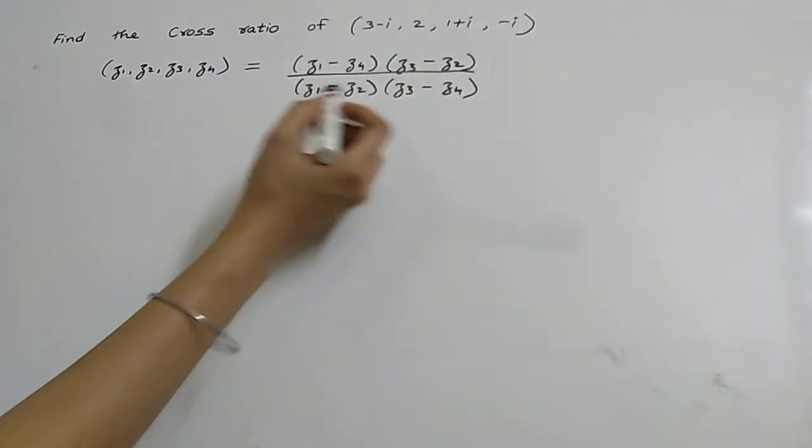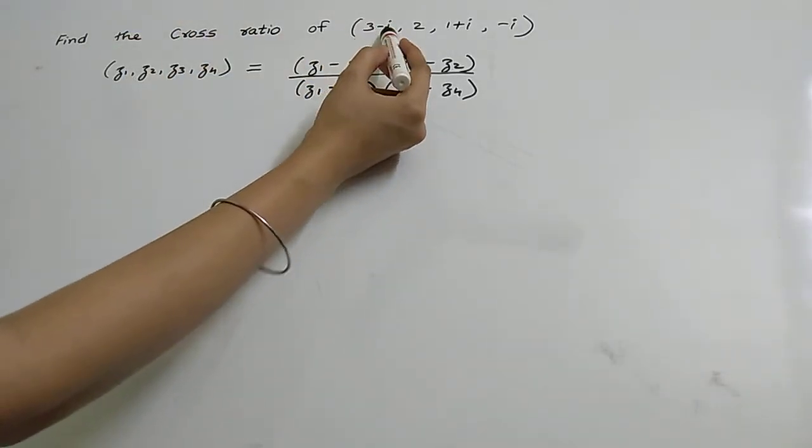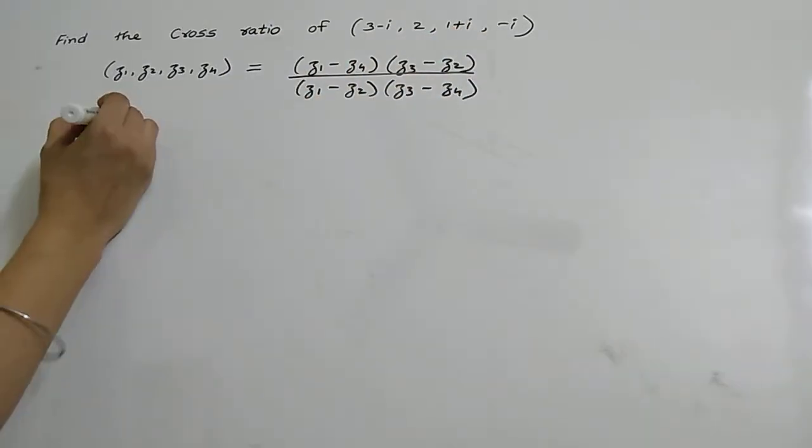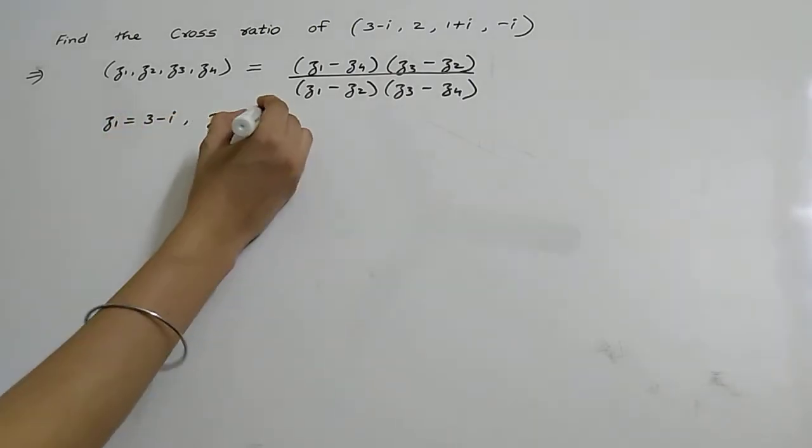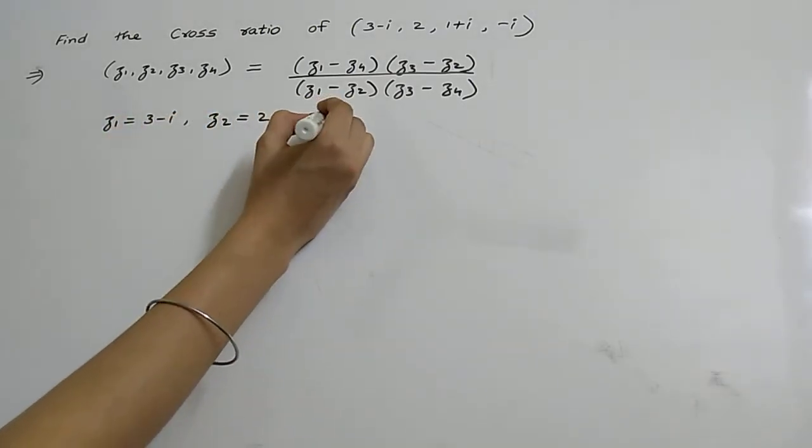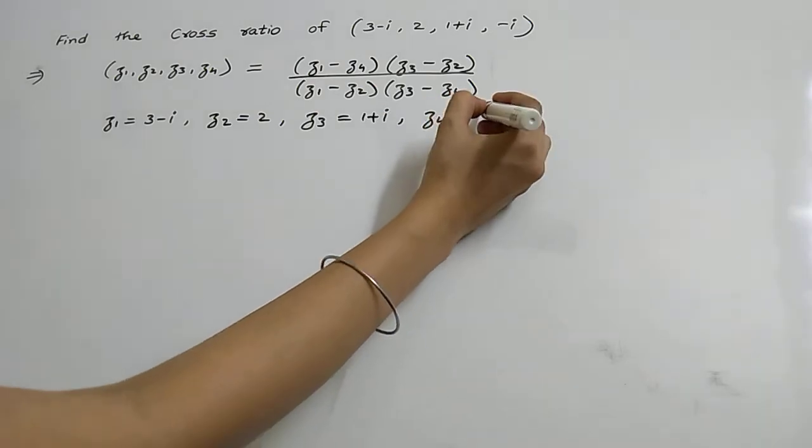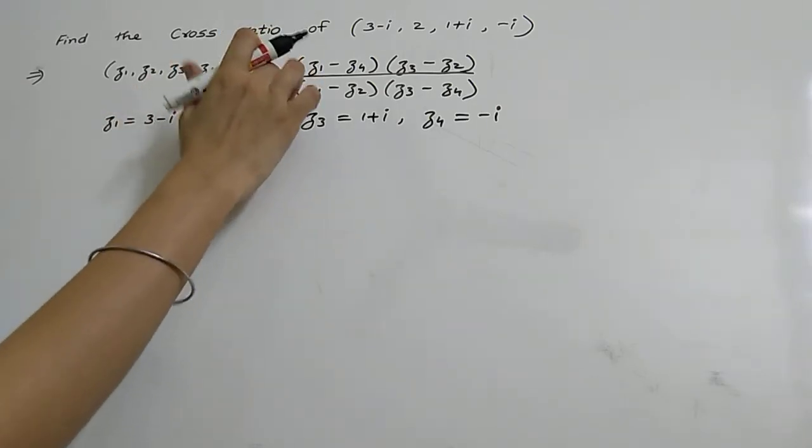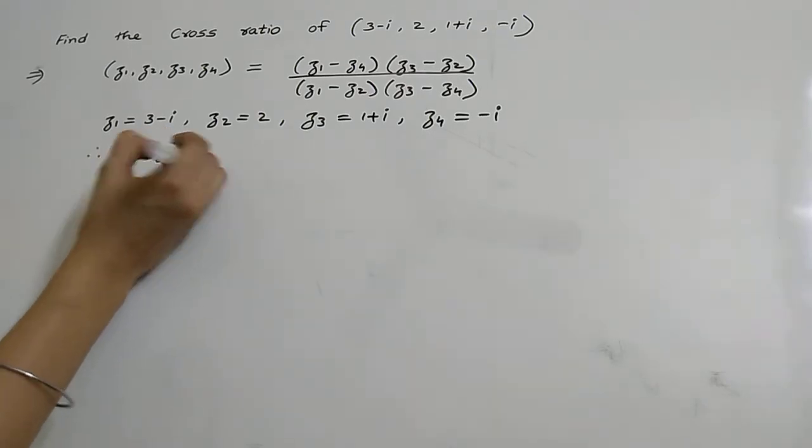So z1 is equal to 3 - i, z2 is equal to 2, z3 is equal to 1 + i, and z4 is equal to -i. Therefore, we substitute these values into the formula.